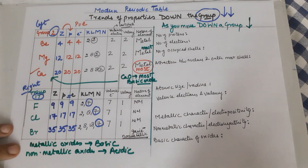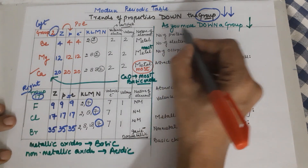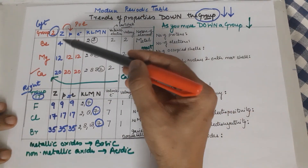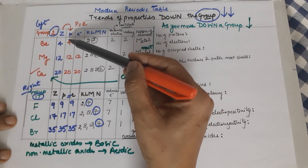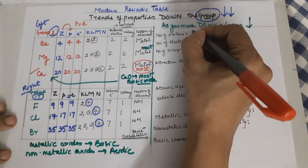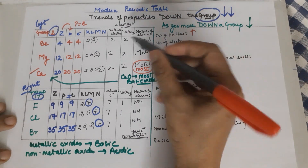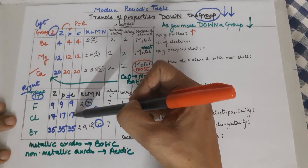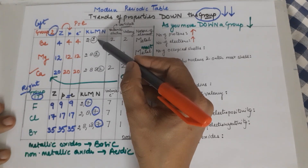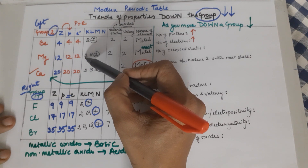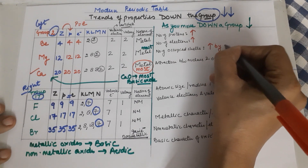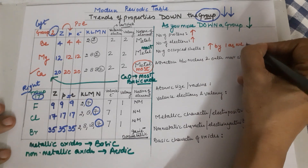All three — fluorine, chlorine and bromine — are non-metals in Group 17. Now as you go down the group, whether Group 2 or Group 17, you will find the same trends. Number of protons is increasing: 4, 12, 20 in Group 2, and 9, 17, 35 in Group 17. Number of electrons is also increasing. Number of occupied shells: beryllium has K, L (2 shells); magnesium K, L, M (3 shells); calcium K, L, M, N (4 shells). The number of shells increases by one as we move down.